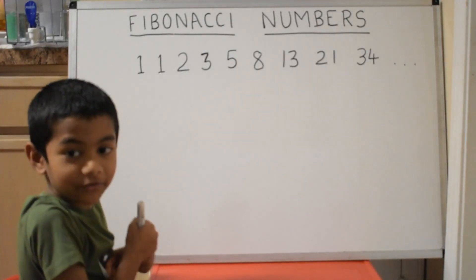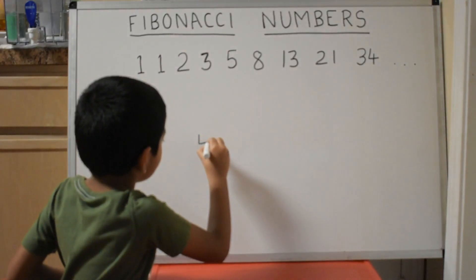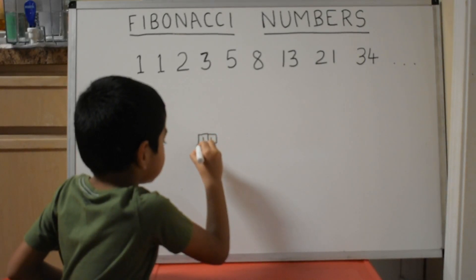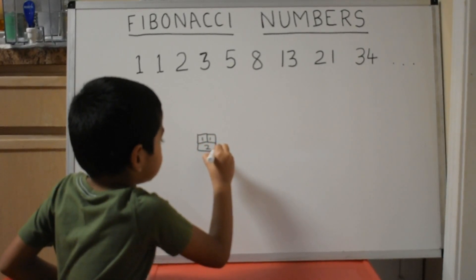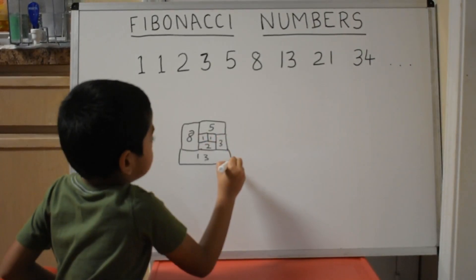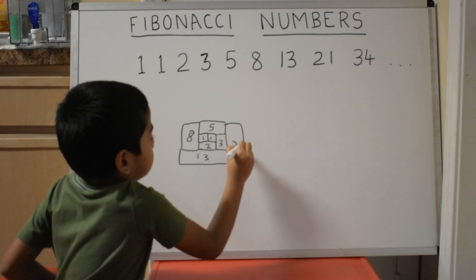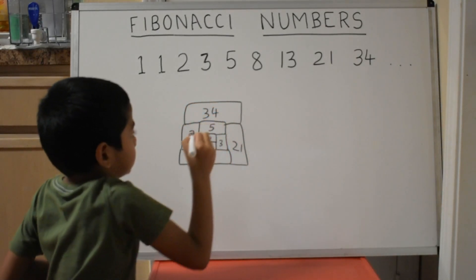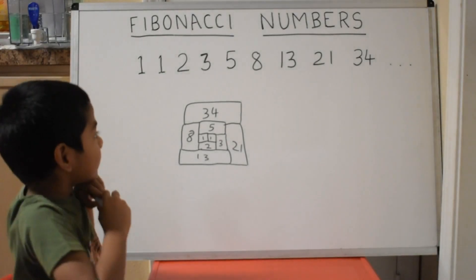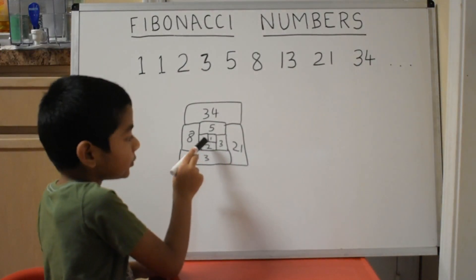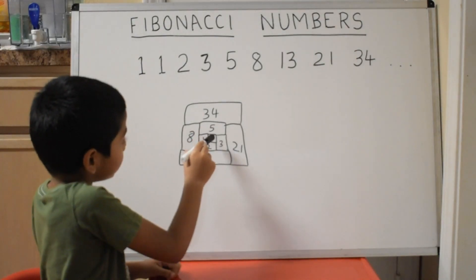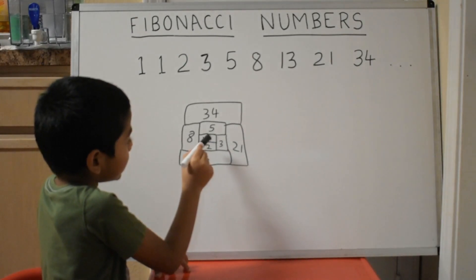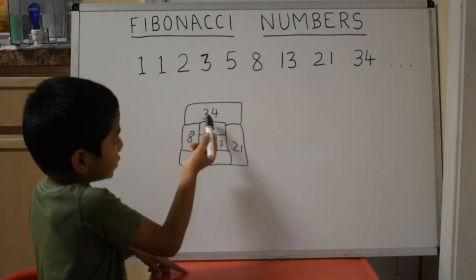Let me put it in a different way. So, 1 plus 1 becomes 2 here. Then, 1 plus 2 becomes 3. I put a 3 here. Then, 2 plus 3 equals 5, and so on.